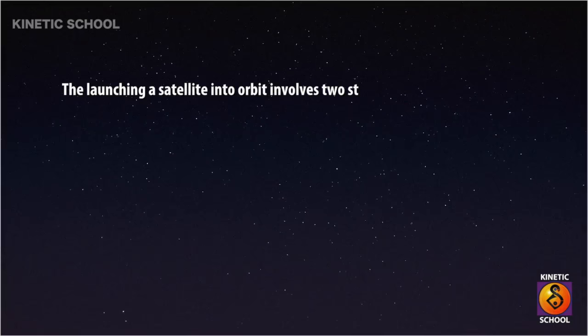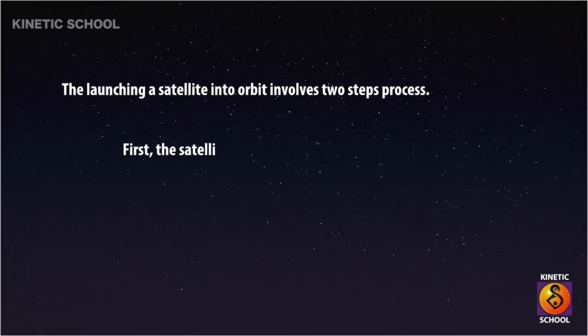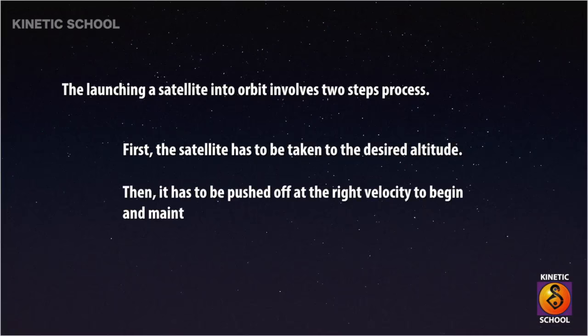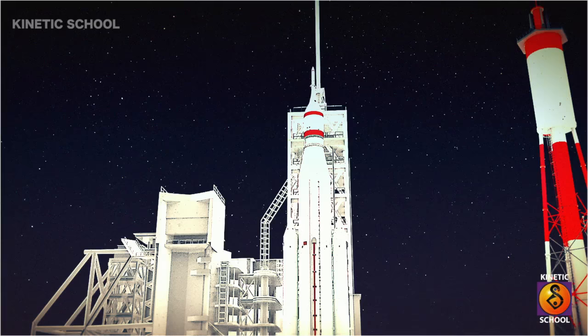Launching a satellite into orbit involves a two-step process. First, the satellite has to be taken to the desired altitude. Then, it has to be pushed off at the right velocity to begin and maintain its orbit.